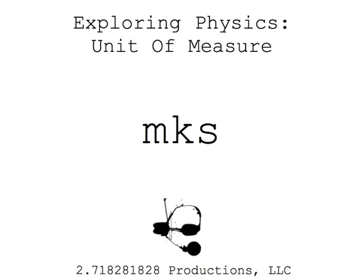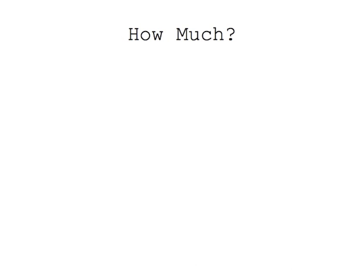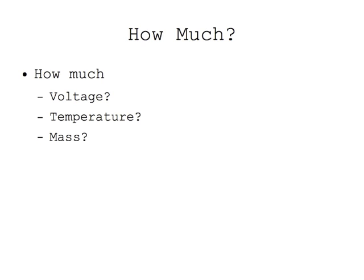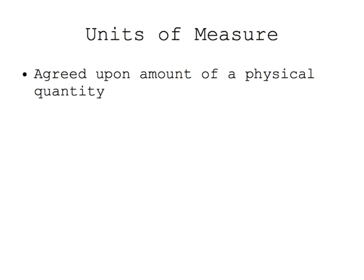One of the most common and best questions that you can ask as a physicist is: how much? How much voltage? How much temperature? How much mass? How much distance? How much time? In order to intelligently answer these questions, we must be able to use an amount that is universally understood amongst other physicists and humans. These are known as units of measure — a generally agreed upon amount of a physical quantity. It is then possible to describe other measurements as containing a multiple of this generally agreed upon quantity.